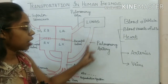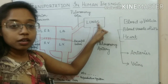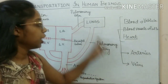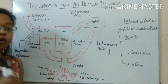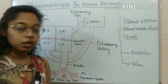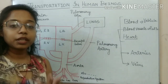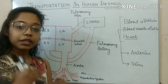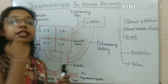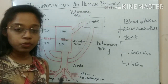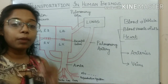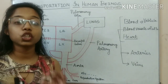Since this artery is connected to the lungs, it is named the pulmonary artery. As we have already seen in a previous video, by simple diffusion the deoxygenated blood receives oxygen and gives its carbon dioxide to the alveoli, which is then exhaled out through the nostrils. The blood has now become oxygenated.